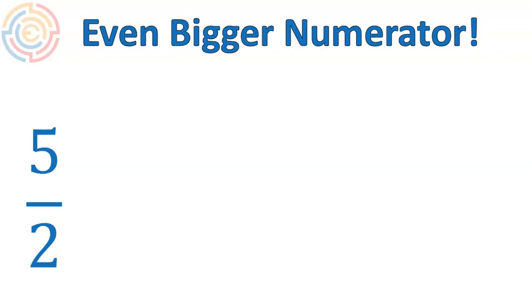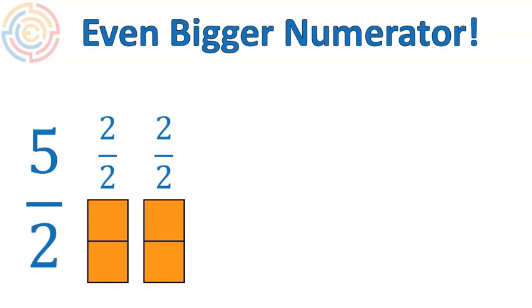In this example, I have an even bigger numerator. I want you to try this one out. Try drawing squares or boxes or something similar. You could draw circles, I guess. Try and draw those pieces and fill in part out of the whole and change this improper fraction into a mixed number. Pause the recording. Try it out. All right. I hope you're back after having tried this out. For me, I'm going to use squares for this one. So I'm going to start out with two out of two and then I'm going to do another two out of two and then I'm going to do one out of two.